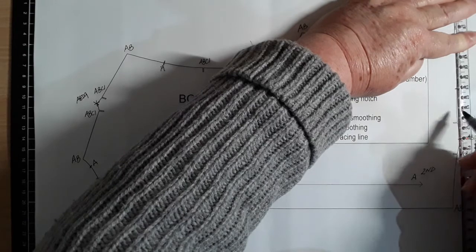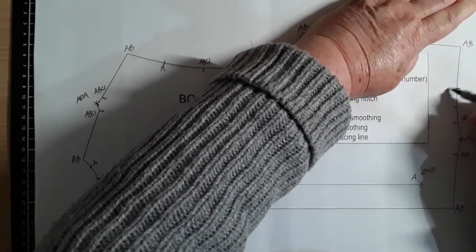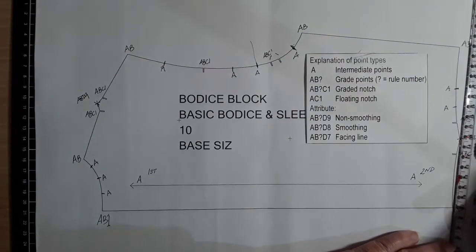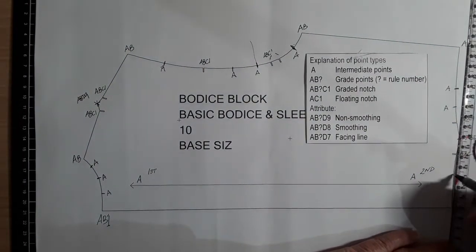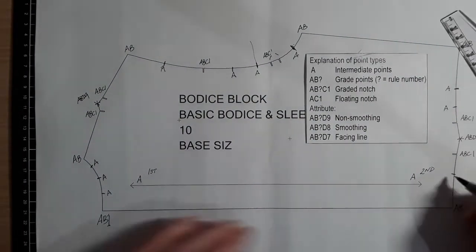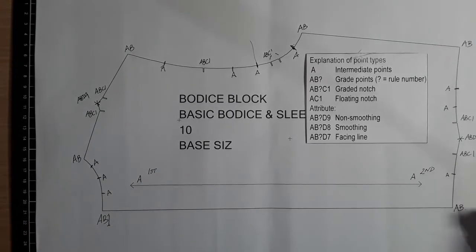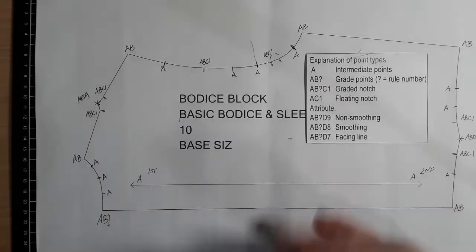Maybe another one there. So A and A, and then here A. And if there's not quite enough we can always add extra smoothing into the pattern after we've done the digitizing. So the next ones we would do are...